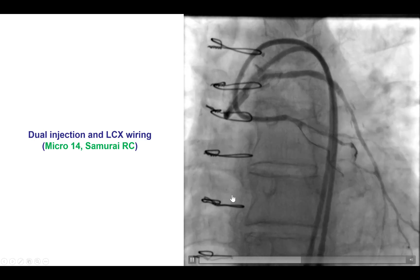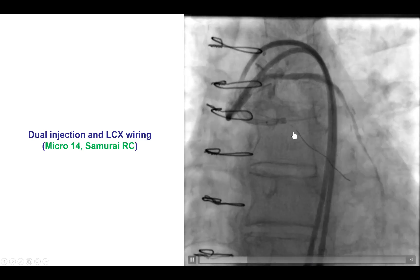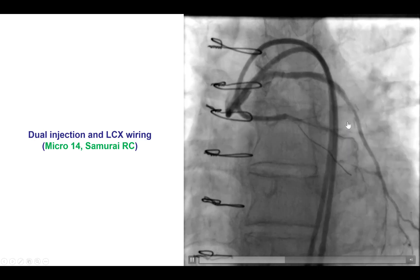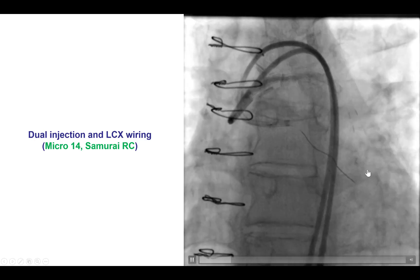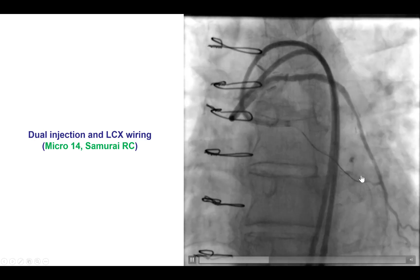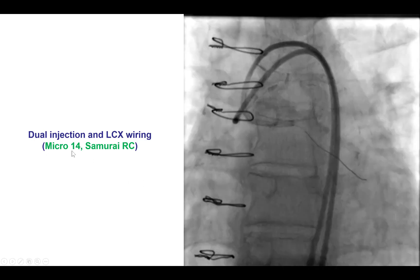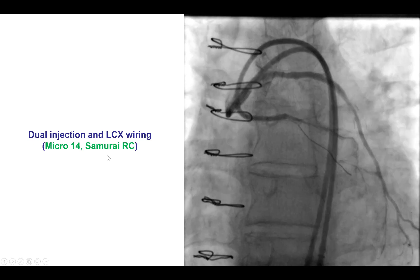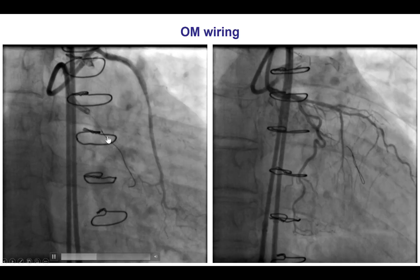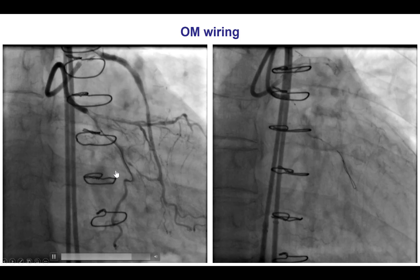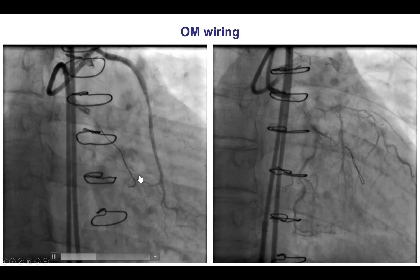When we did a dual injection — and sometimes this is necessary to understand the anatomy — it appeared that there was actually a channel from the proximal circumflex into the obtuse marginal branch. We used a Micro-14 and a workhorse guide wire, and we were actually able fairly easily to advance the wire into the first obtuse marginal branch.